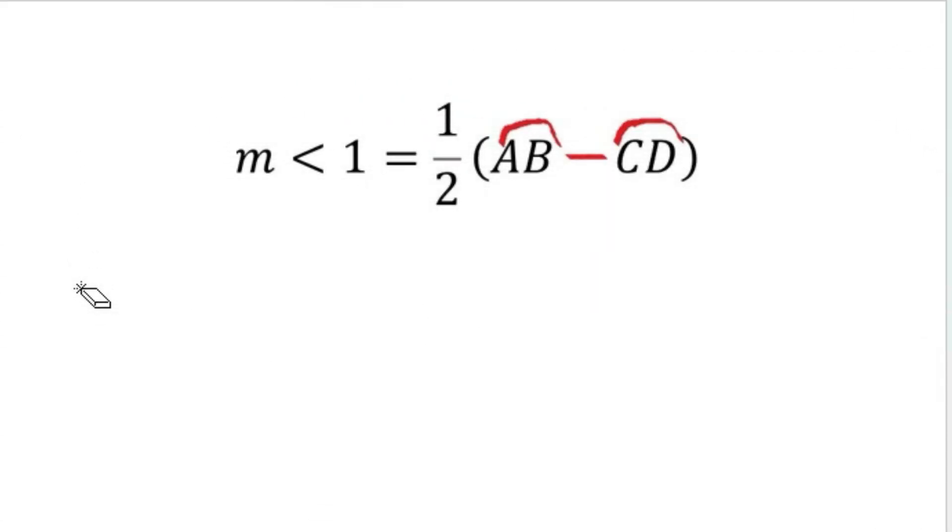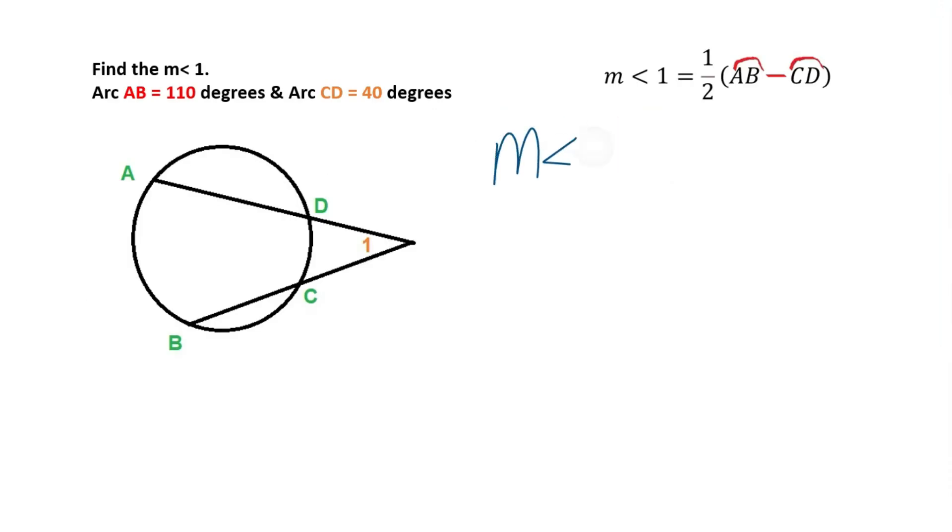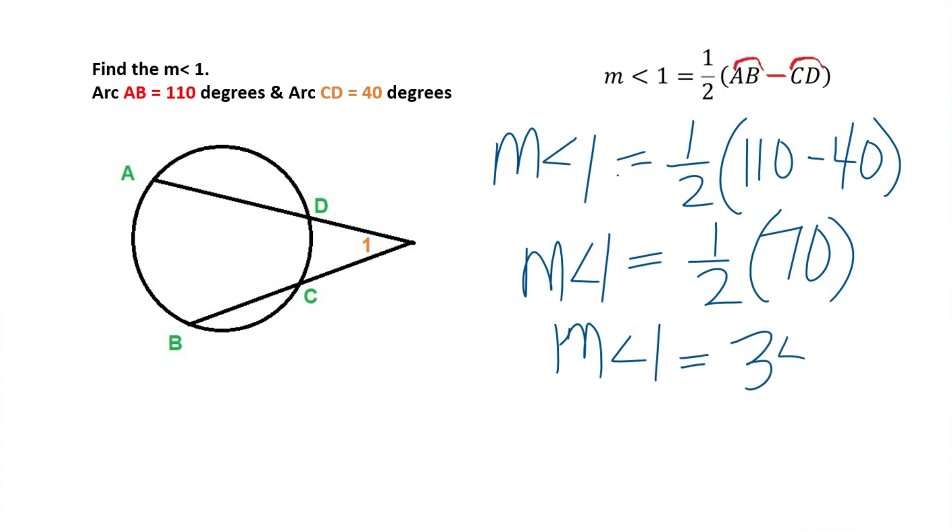So we're just going to plug in our numbers into our formula. We're looking for the measure of angle one, and that is equal to one-half the major arc, which is 110, minus the minor arc, which is 40. We calculate what's inside the parentheses and that would give us 70, and we take one-half of that and that's going to be the measure of our angle one. So our measure of angle one is equal to 35 degrees.